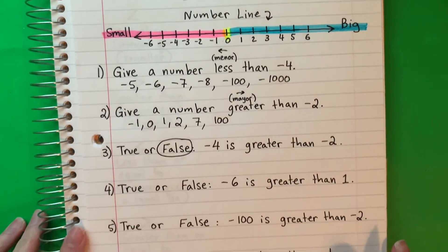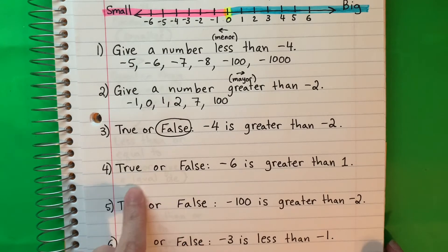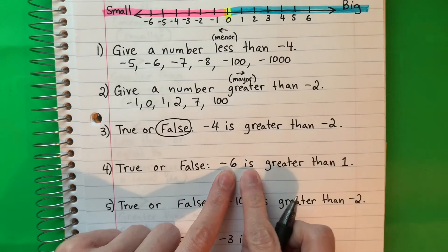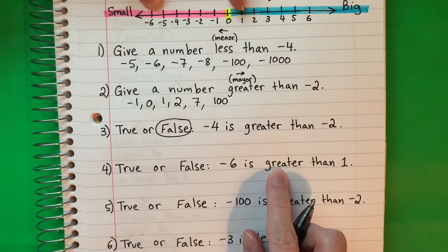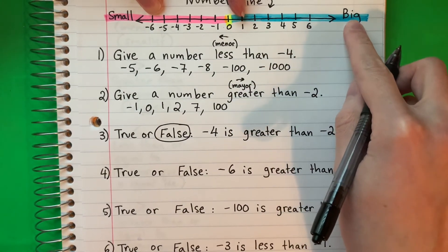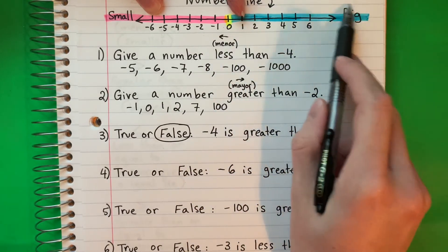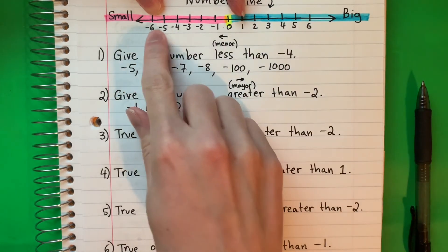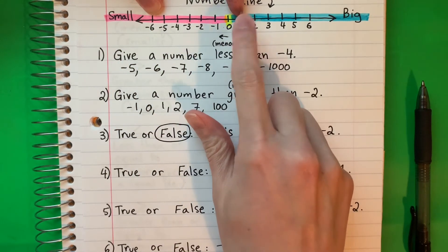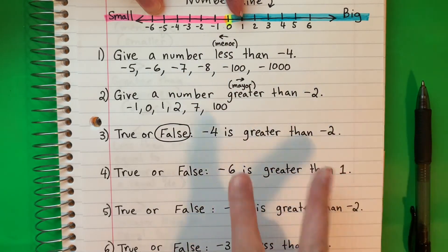True or false? Cierto o falso? Negative 6 is greater than 1. Here's negative 6 and here's 1. Greater means big — grande — big is to the right, a la derecha. Which number is bigger? The one on the right. So which one is on the right — negative 6 or 1? 1 is on the right, so 1 is greater. This is false — es falso. We need to flip that.